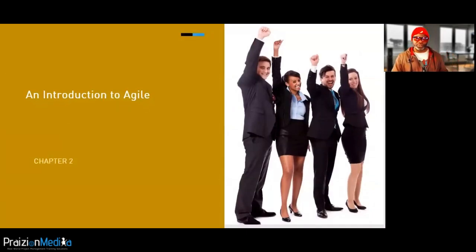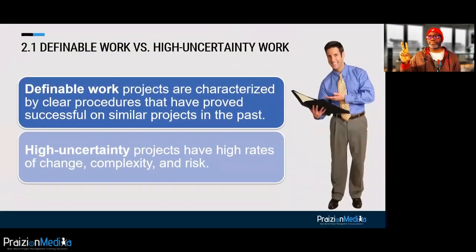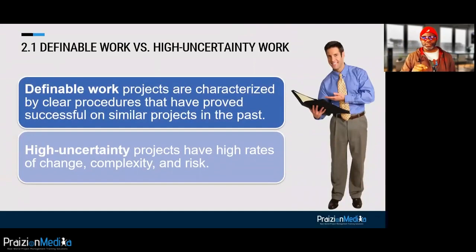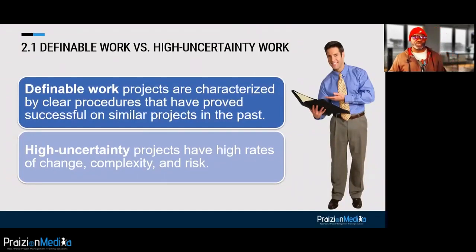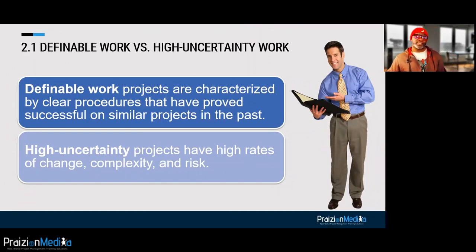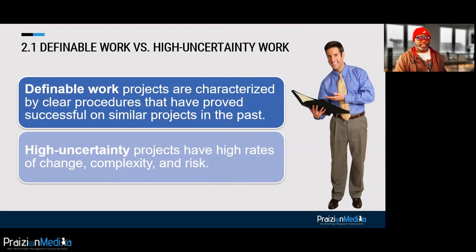Let's go to chapter two, called an introduction to Agile. Two types of work: definable work and high uncertainty work. If you're working on high uncertainty projects, you want to use an Agile approach because it's better to cope with change and complexity. For definable work, it's better to use a predictive approach.